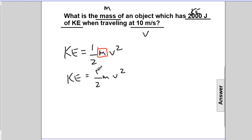We'll change colors. 2, 2. And the opposite of multiplying by v² is dividing by v².